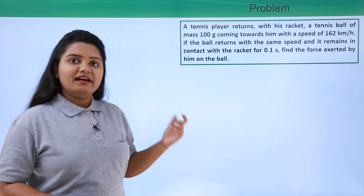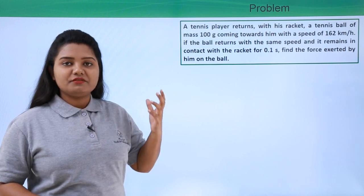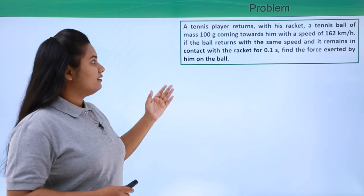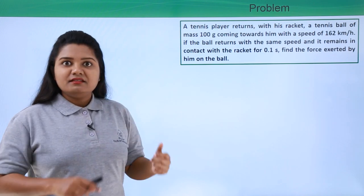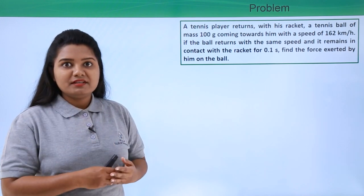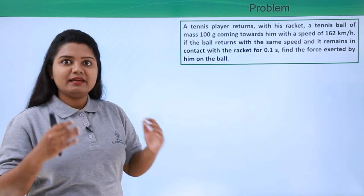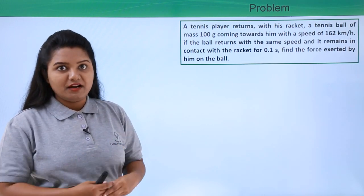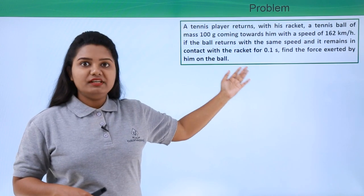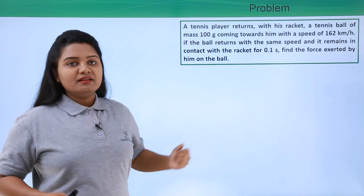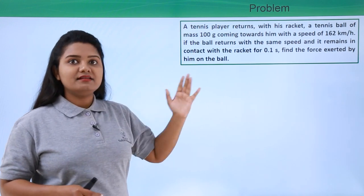So there is a tennis player who hits a tennis ball of 100 grams with a force that we need to calculate. The tennis ball was coming towards him with a speed of 162 kilometers per hour and it returns with the same speed — 162 kilometers per hour — and it remains in contact with the racket for only 0.1 seconds. We need to find the force that the player has exerted on the ball.